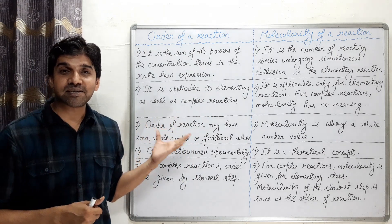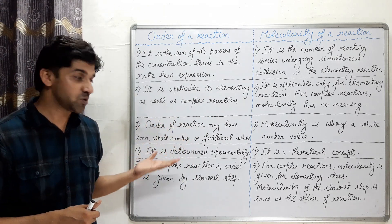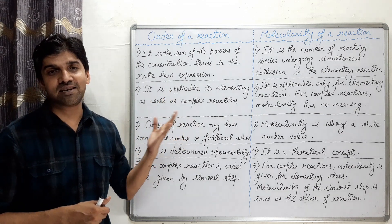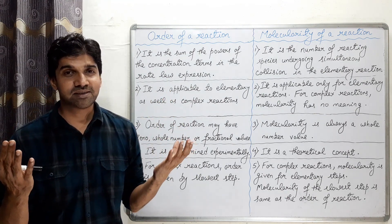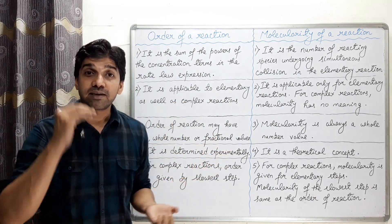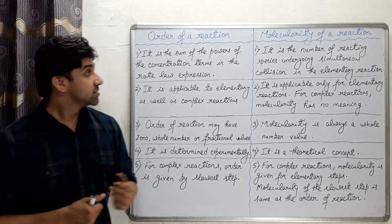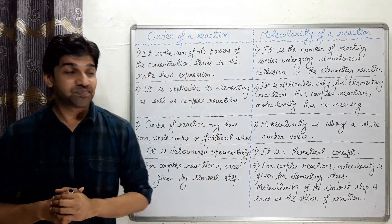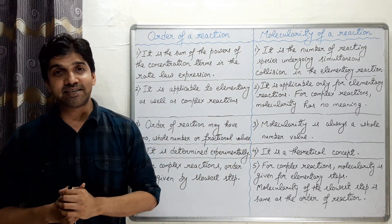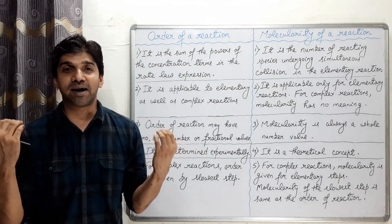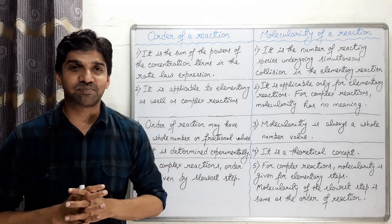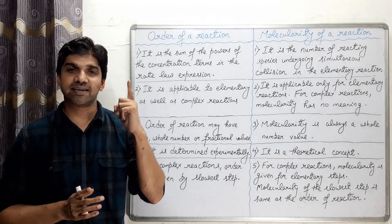The order of reaction may have zero, positive whole number, fractional, or even negative values. Molecularity is always a whole number — it can be 1 (unimolecular), 2 (bimolecular), or 3 (trimolecular).